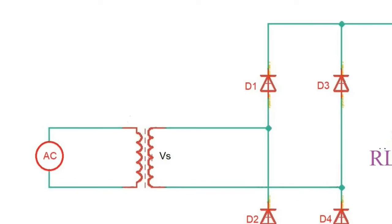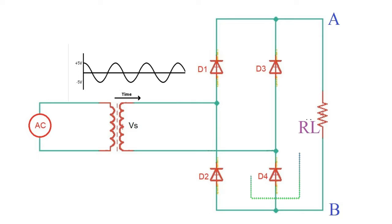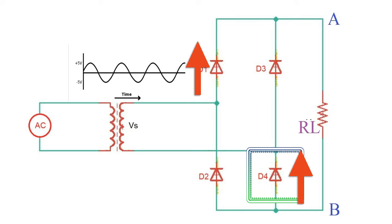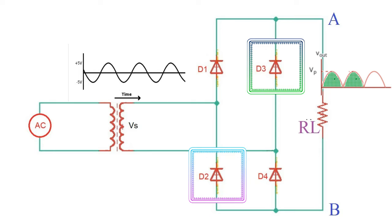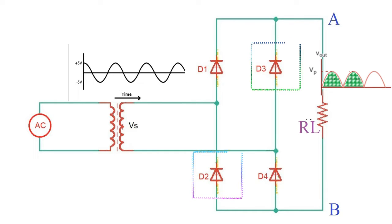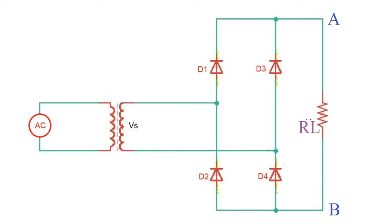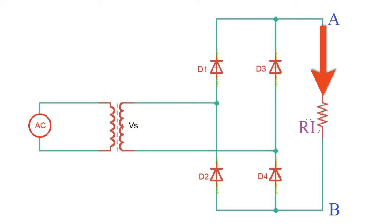So how does the single-phase full-wave rectifier work? During the positive half cycle of VIN, diodes D1 and D4 are forward biased while diodes D2 and D3 are reverse biased. Then for the positive half cycle of the input waveform, current flows along the path of D1, node A, RL, node B, D4, and back to the supply.